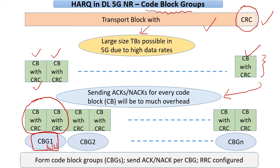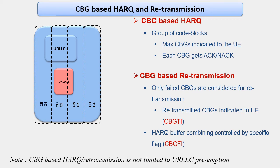This idea also has another motivation beyond large transport block sizes. As URLLC picks up, one interesting scenario is that URLLC data has to be scheduled possibly pre-empting the mobile broadband data. When such things happen, certain code block groups might get hit, not the entire transport block. This allows selective retransmission of certain code block groups instead of sending the whole transport block again. So these are some of the differences.